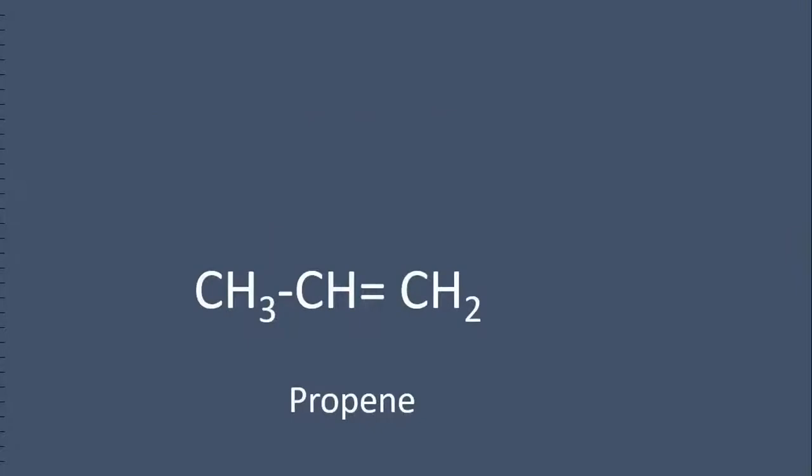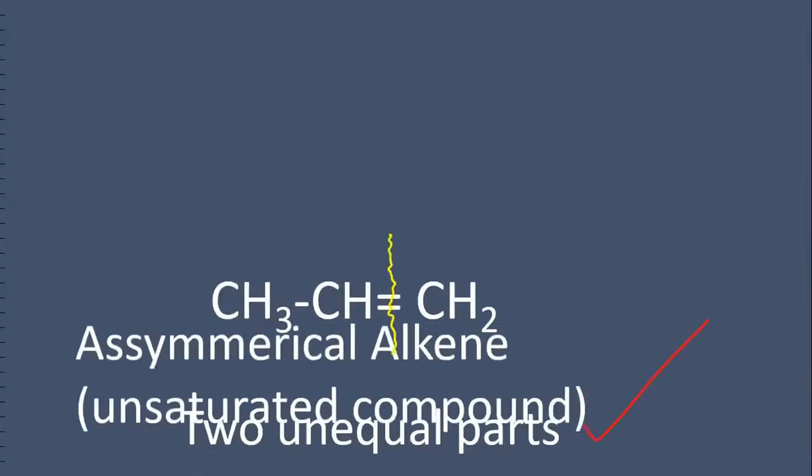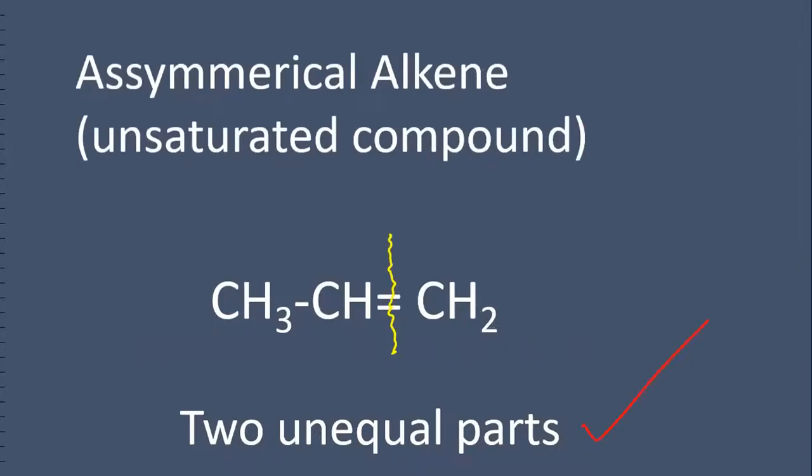This is propene. For propene, at the place of the double bond, we get two unequal parts. This is called an asymmetrical alkene.